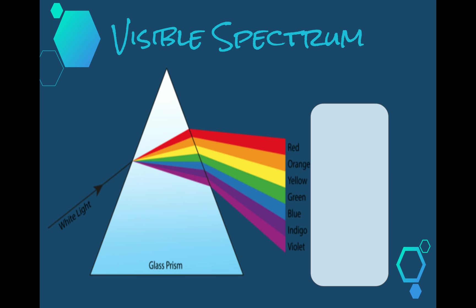Isaac Newton discovered that if a beam of light is passed through a prism like our triangular prism on the screen, it can be broken up into the seven colors of the spectrum. This splitting of white light into its colors is known as dispersion.